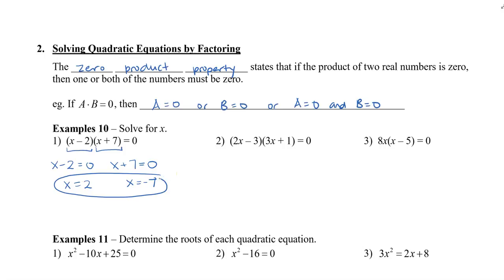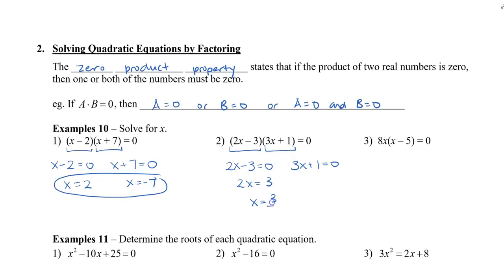In the second one, it's a little bit different — we have a bigger factor because it has a coefficient, but we do the same thing. Because these two factors are multiplied together, we have 2x minus 3 equals zero, or 3x plus 1 equals zero. Solving: 2x equals 3, so x equals 3 over 2. In the second equation, 3x equals negative 1, so x equals negative 1 third.